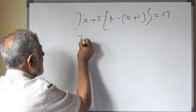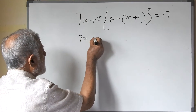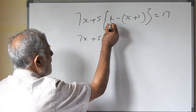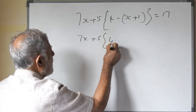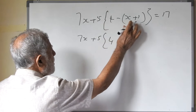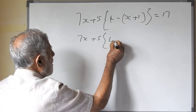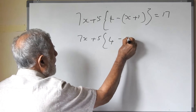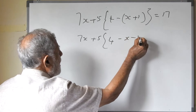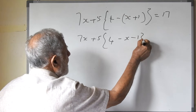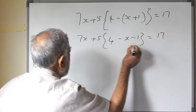So we write like this: 7x plus 5, bracket, 4. This 4 has nothing to do with the bracket. 4 minus x minus 1, close bracket, equals 17.